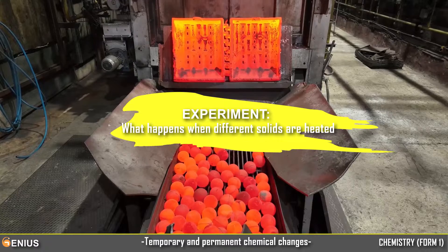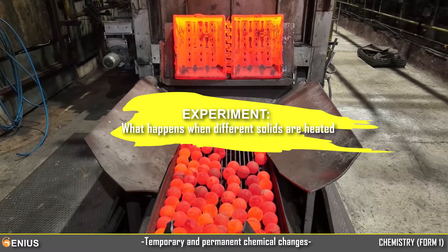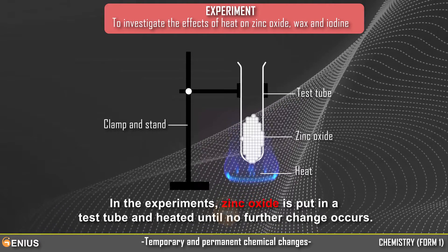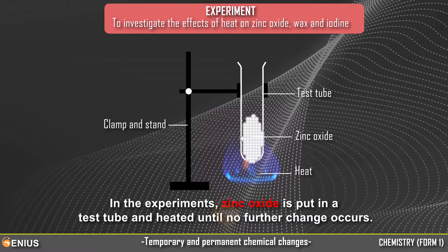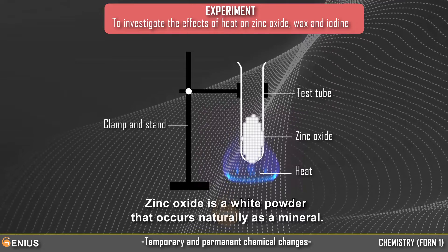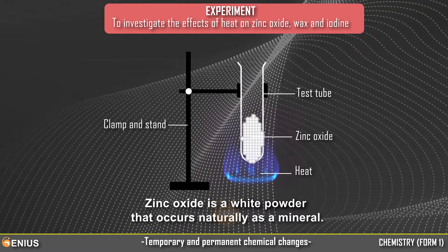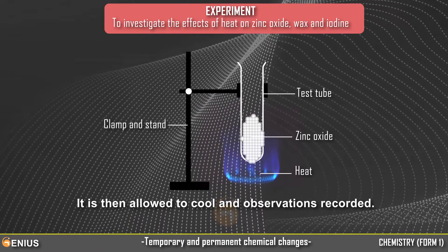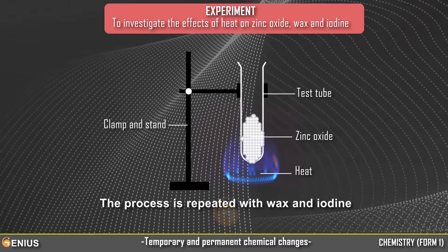What Happens When Different Solids Are Heated — the first experiment. Zinc Oxide is put in a test tube and heated until no further change occurs. Zinc Oxide is a white powder that occurs naturally as a mineral. It is then allowed to cool and observations recorded. The process is repeated with wax and iodine.